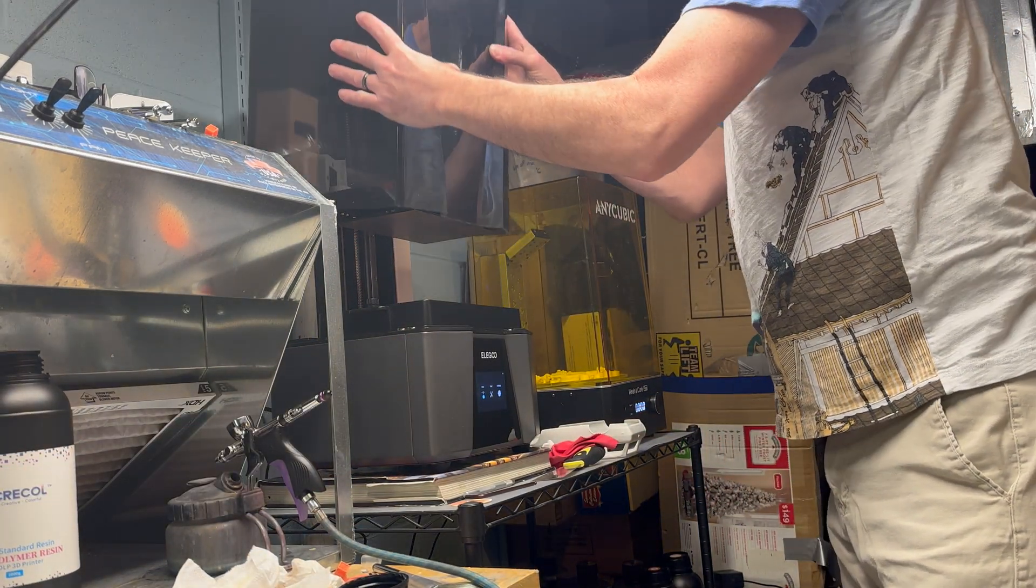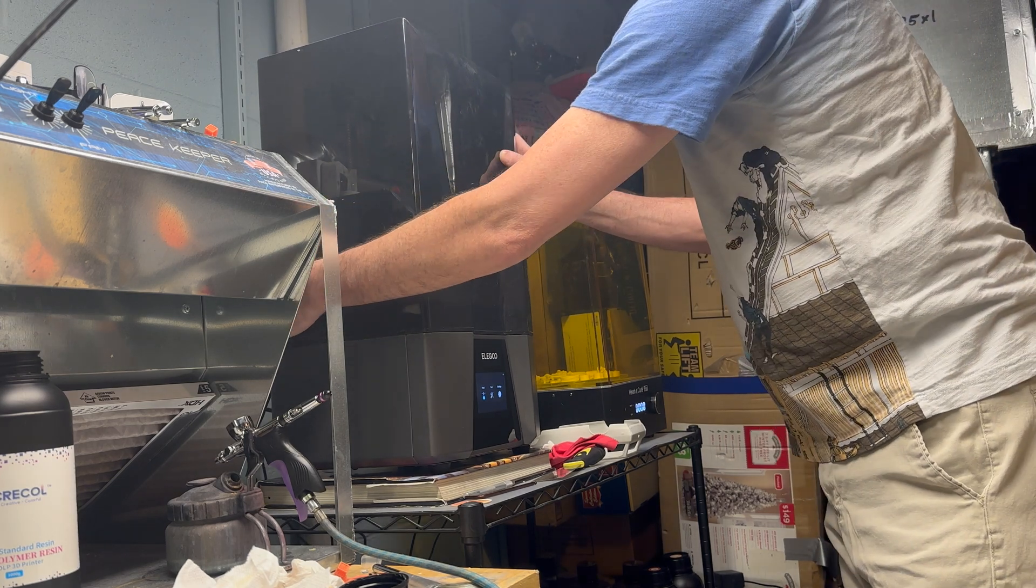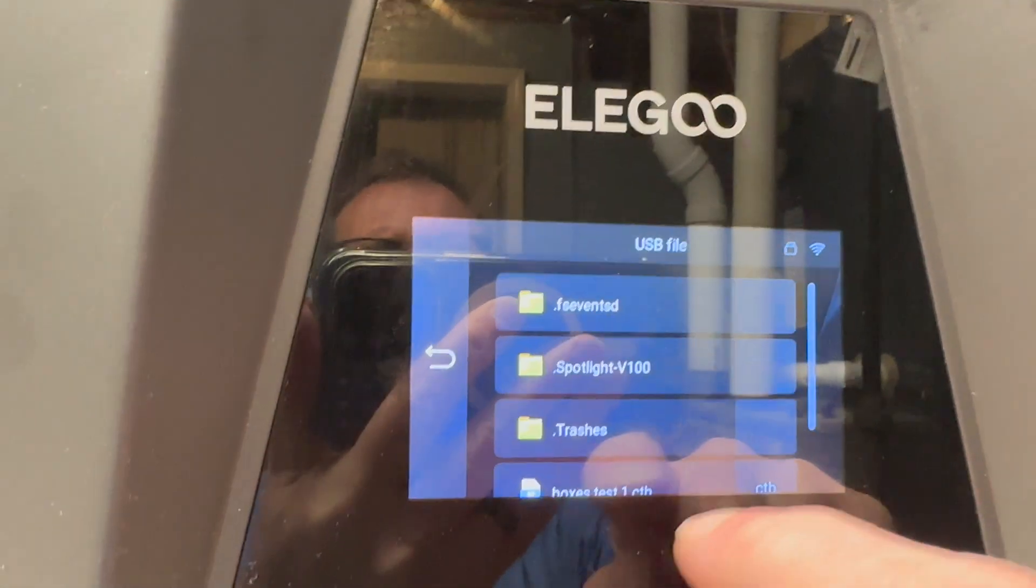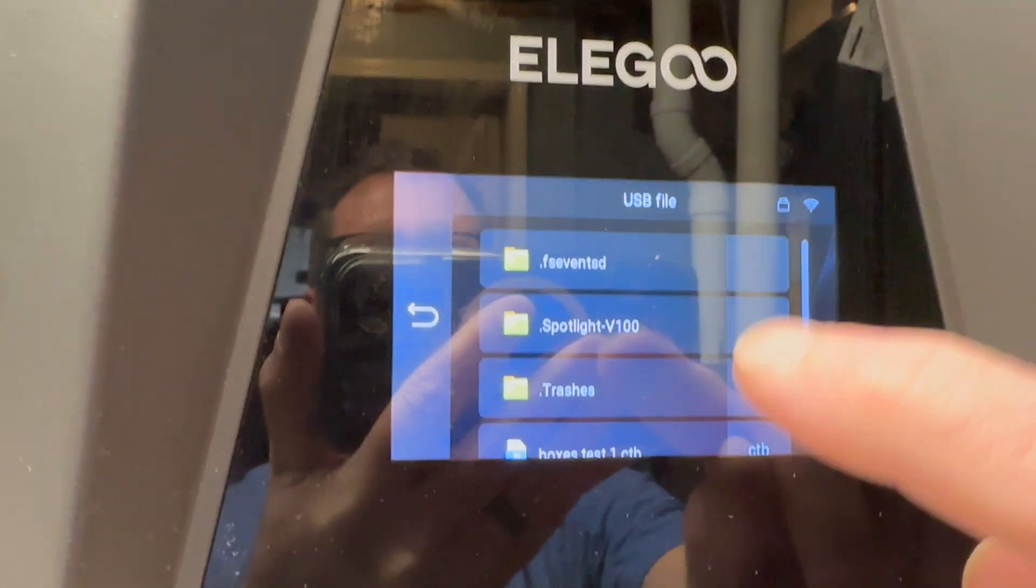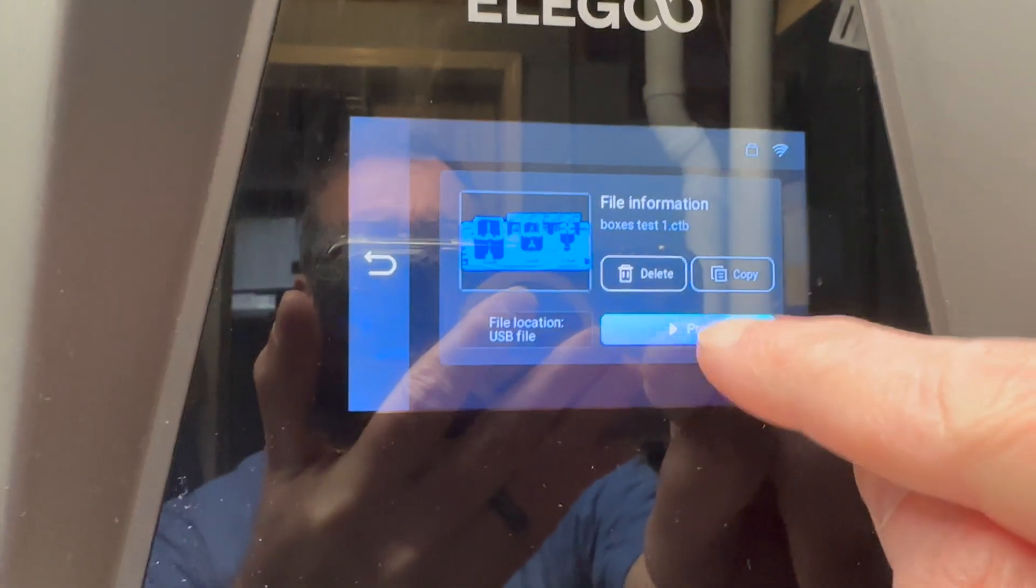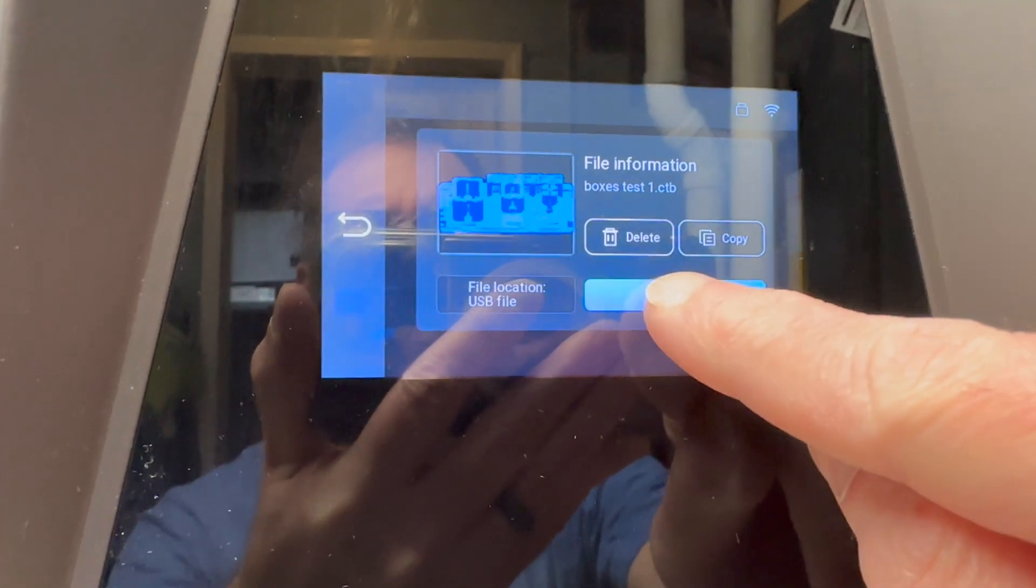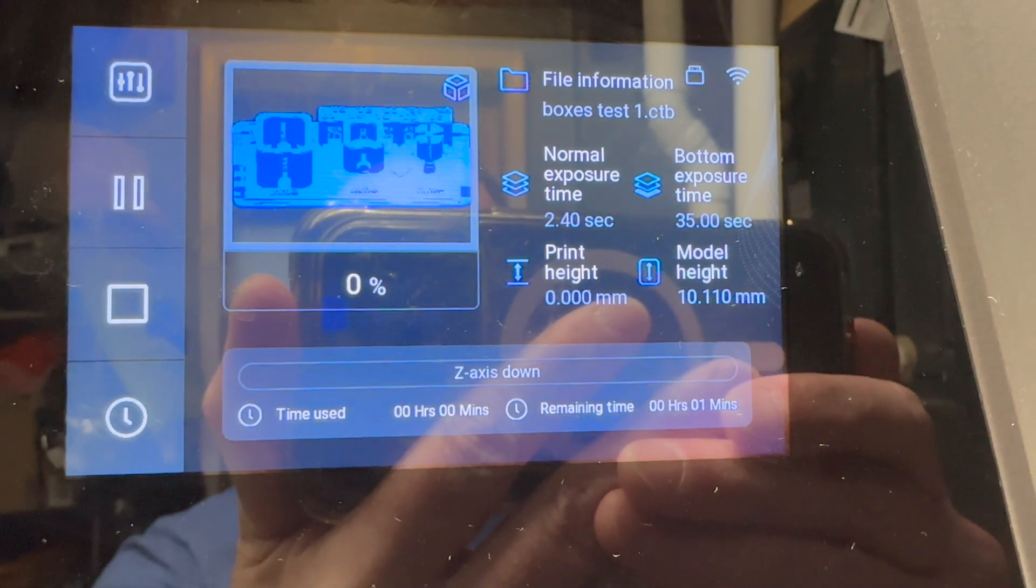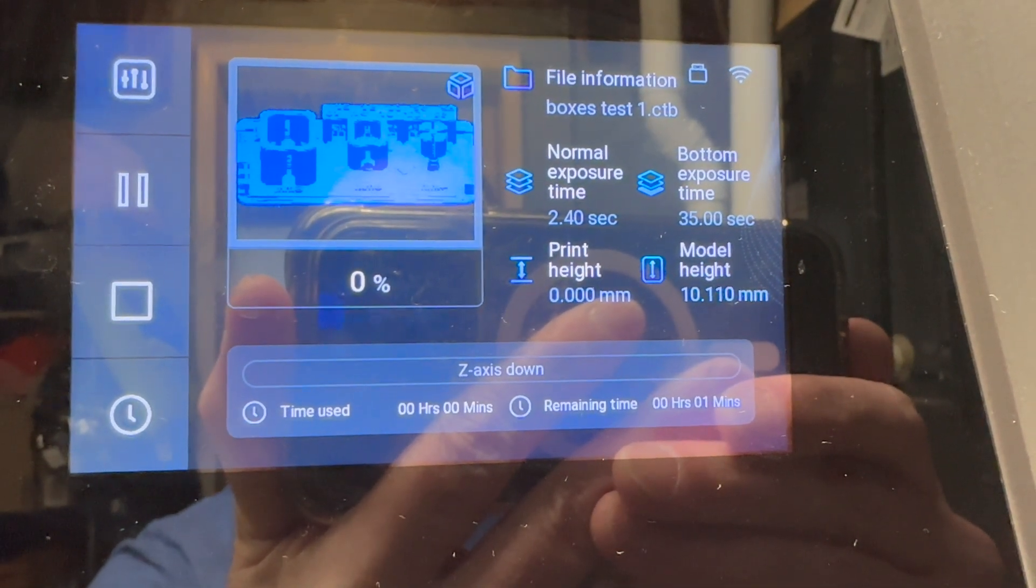But before printing I'm going to turn on the heater for about a half an hour. I'm going to get the resin nice and warm for the test. Okay it's been a half an hour. We're at 25 degrees Celsius. So we'll go to print, USB, print boxes test one, and print. And we'll check it in an hour and 18 minutes.